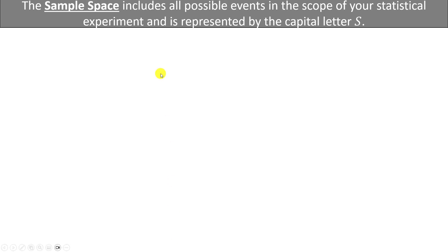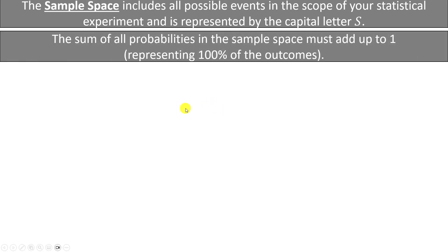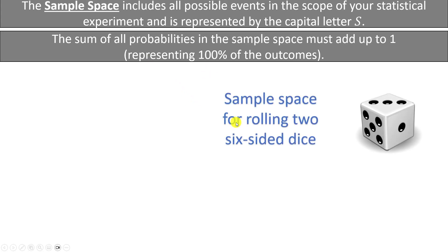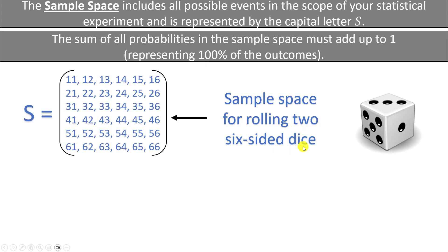The next concept is the sample space. The sample space includes all possible outcomes in the scope of your statistical experiment and is represented by the capital letter S. The sum of all probabilities in the sample space must add up to 1, which represents 100% of the outcomes.